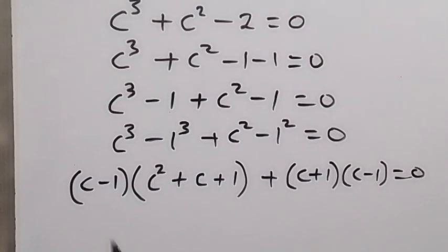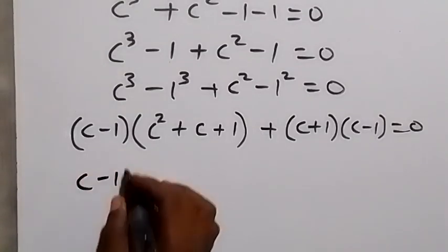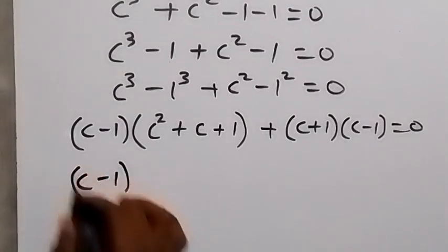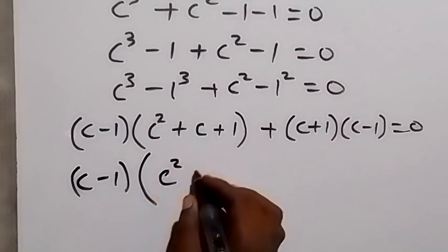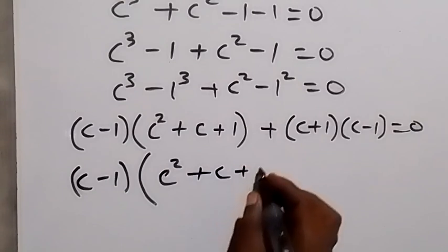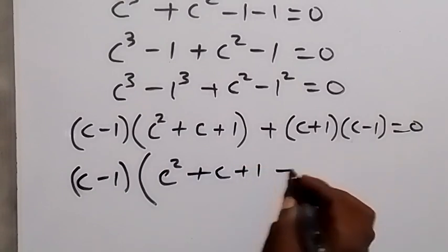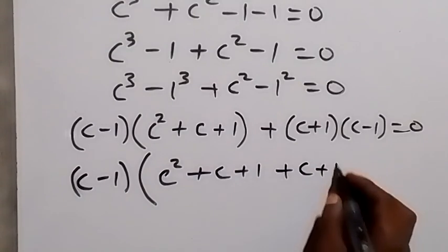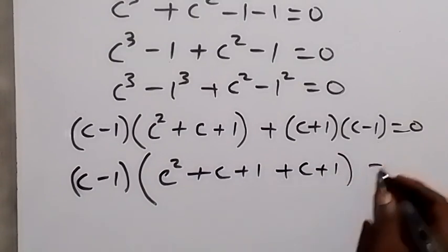From here we have (c minus 1) as a common factor. Let's take it out, and in the next step we have (c minus 1) times the bracket containing c squared plus c plus 1 plus (c plus 1), equals 0.